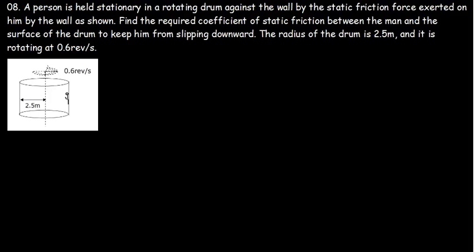Let's talk about centripetal force. Here's the question: a person is held stationary in a rotating drum against the wall by the static friction exerted on him by the wall as shown below. Find the required coefficient of static friction between the man and the surface of the drum to keep him from slipping downward. The radius of the drum is 2.5 meters and it is rotating at 0.6 revolutions per second.